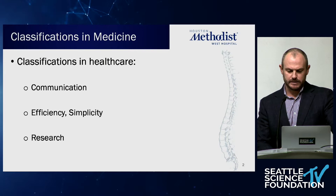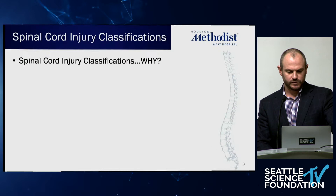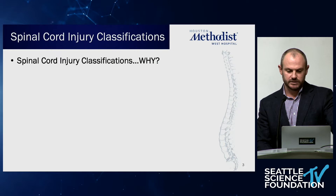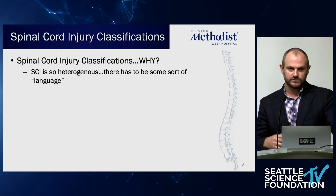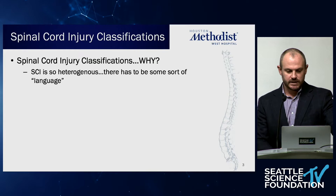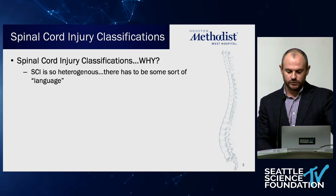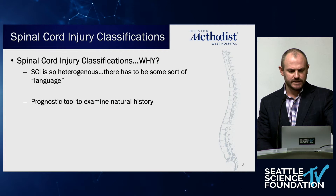Classification systems allow us to produce alphanumeric data to provide meaningful outcomes-based research. As far as spinal cord injury specifically goes, why do we need them? Well, spinal cord injury is a very heterogeneous disease — we've got cervical, thoracic, lumbar, incomplete, complete injuries, central cord syndrome — all of which behave very differently. So we need a unified language to convey the spectrum of spinal cord injury, and these systems also serve as a prognostic tool to examine the natural history of SCI.